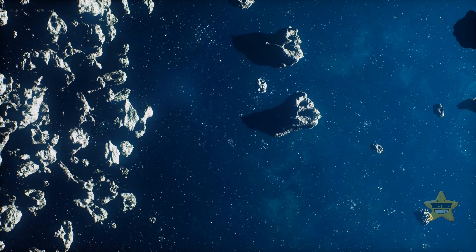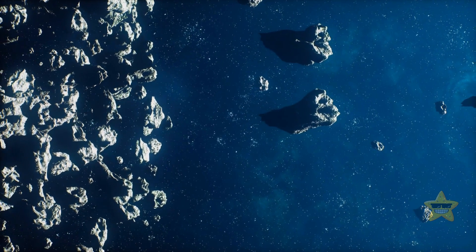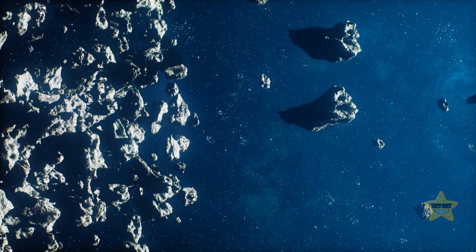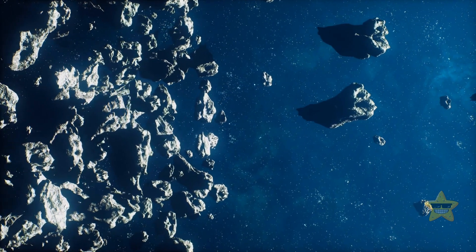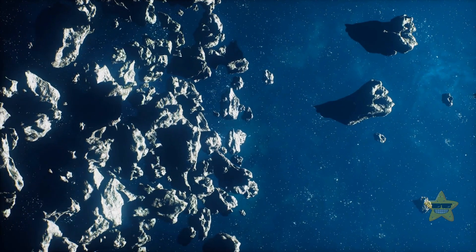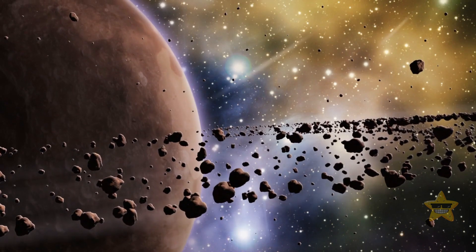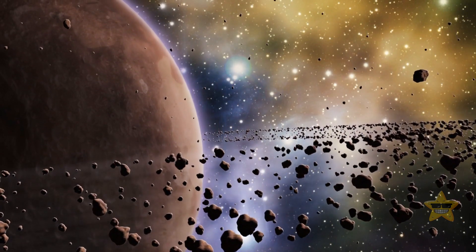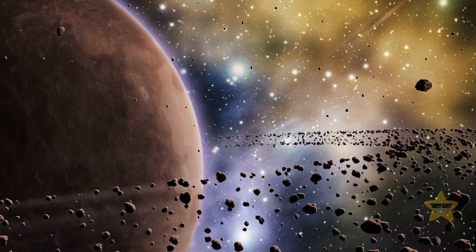These space bodies are often called minor planets or planetoids. They're usually rocky leftovers from the early formation of our solar system that occurred around 4.6 billion years ago.